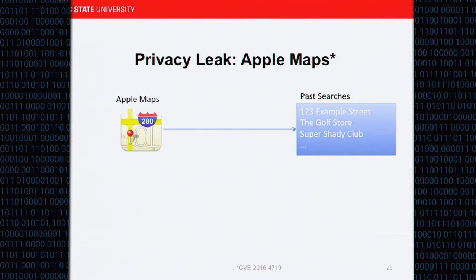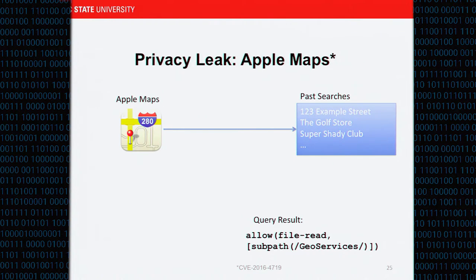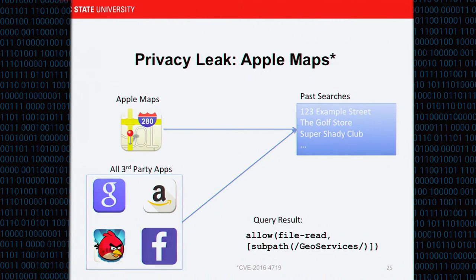The first attack is based on an Apple Maps privacy leak. Apple Maps stores your recently searched locations — exact addresses, store names, or something embarrassing. One of our query results told us that this directory was readable. In that directory there's a file with all previously searched locations. Apple Maps uses the same sandbox profile as all third-party apps, so any app that knows to look there can access your search history.